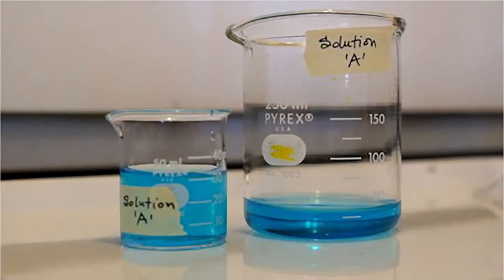Here we have two beakers which contain the same volume of solution A. Compare the depth of the solution between the 50 mil beaker and the 250 mil beaker. The solution in the 50 mil beaker has more depth and it will be easier to pipette the solution out of the beaker.